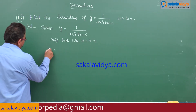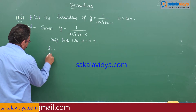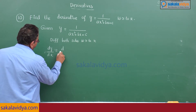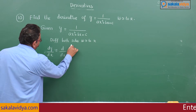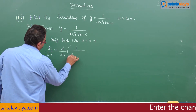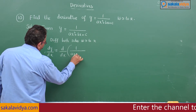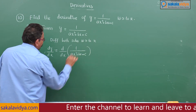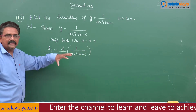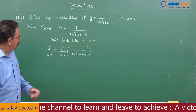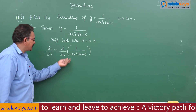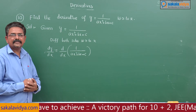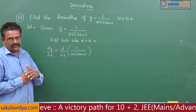It becomes dy by dx equals d by dx of 1 by ax square plus bx plus c. This appears to be of the form d by dx of 1 by x — and the derivative of 1 by x is minus 1 by x square.